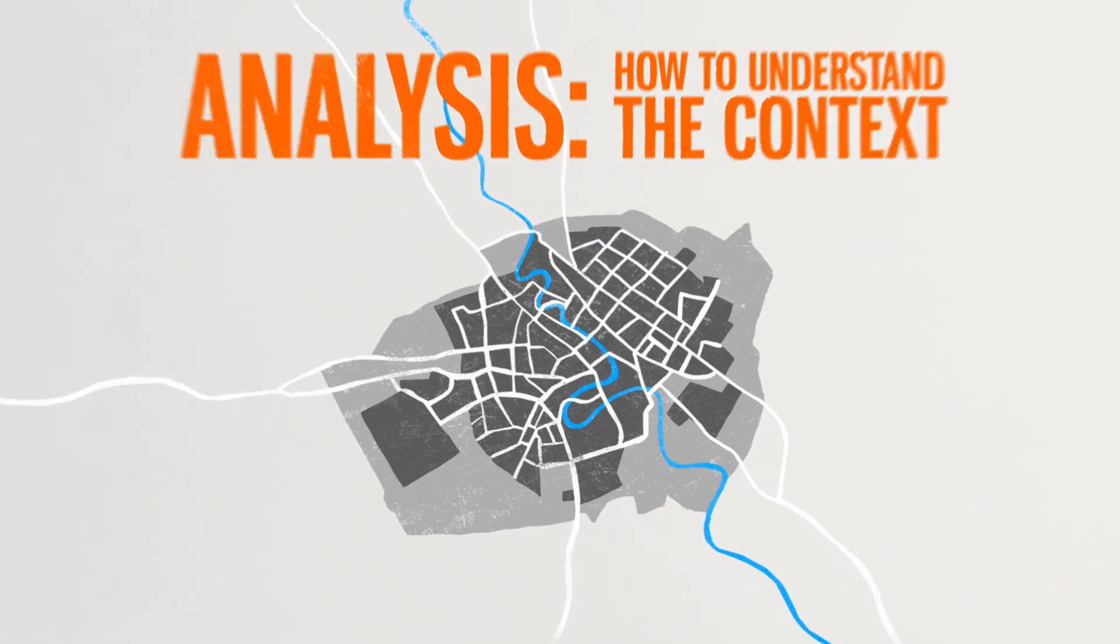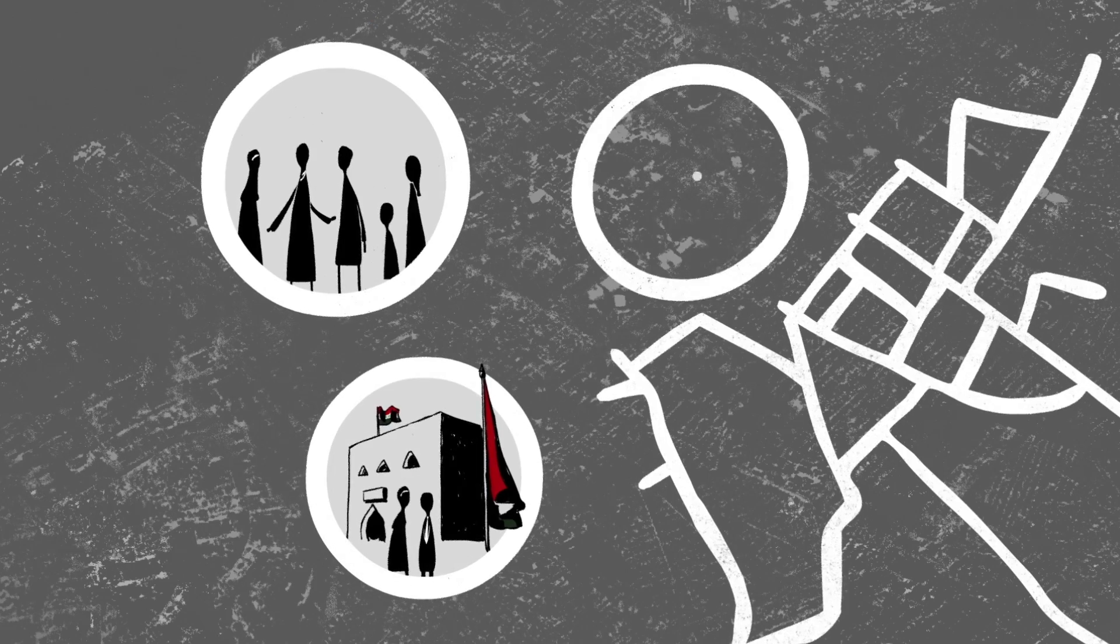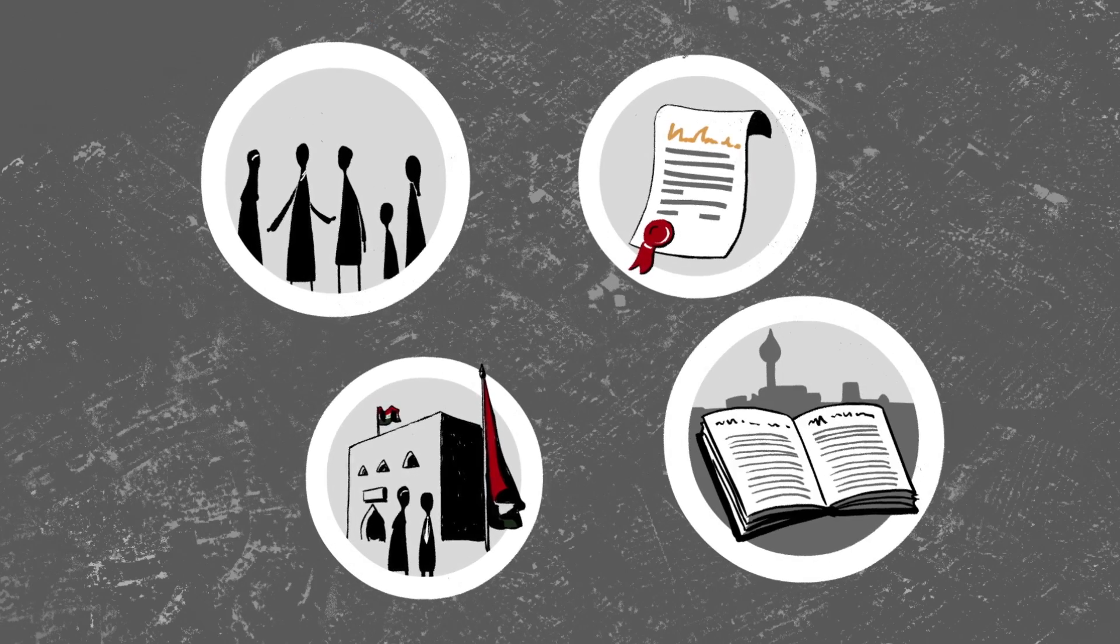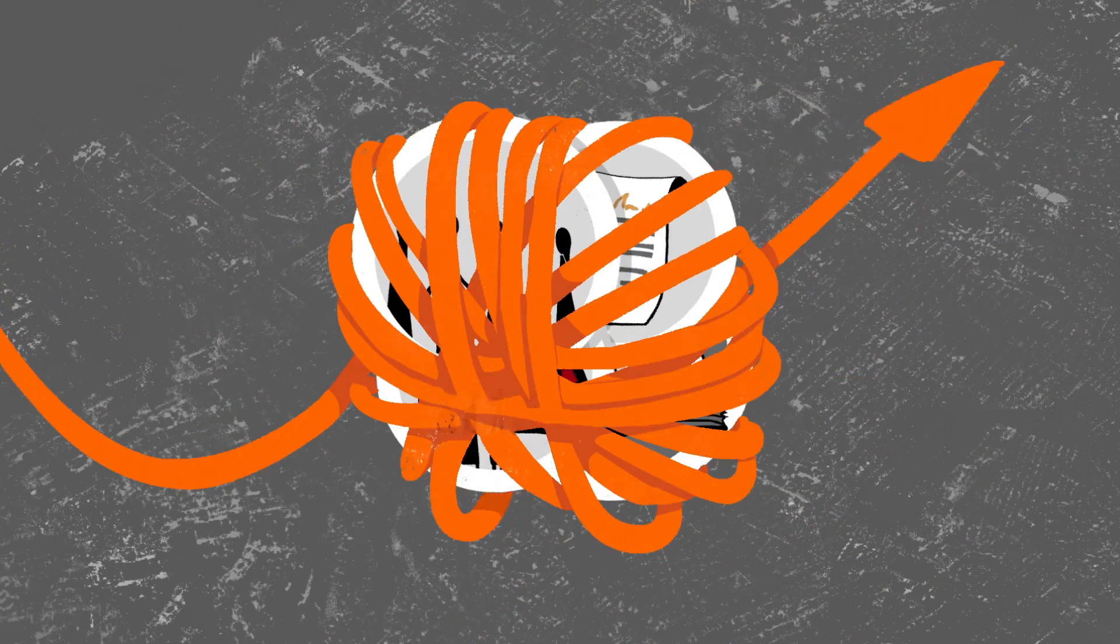Analysis is key. Only through mapping the stakeholders and institutions, policy and legal frameworks, and history and culture of a city will it be possible to begin to understand how to navigate a route through.